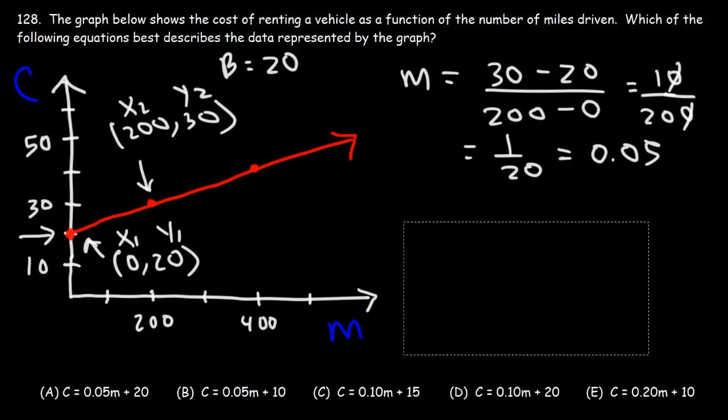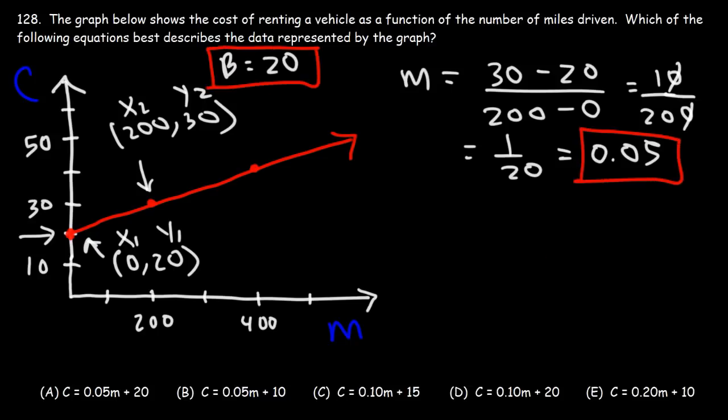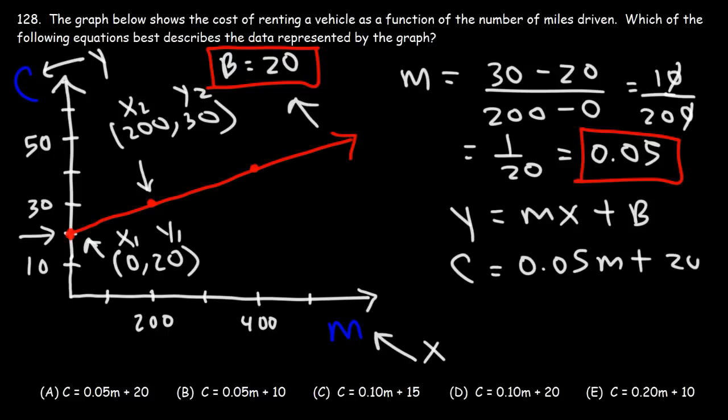So now we have not only the y-intercept, but we also have the slope. Now let's go back to this formula: y equals mx plus b. c is on the y-axis, so we're going to replace y with c. The slope m is 0.05. The number of miles driven, that's on the x-axis, so we're going to replace x with m. And the y-intercept is 20. So thus we have this formula: c equals 0.05m plus 20. So answer choice A is the right answer.